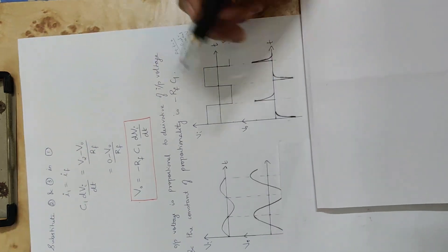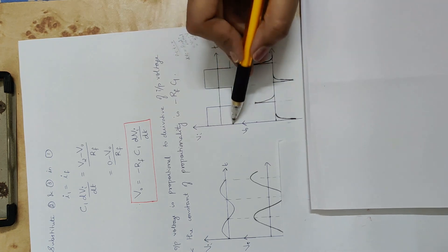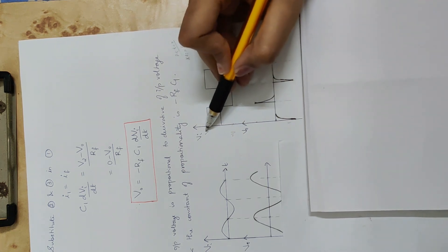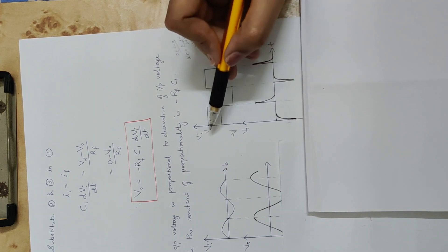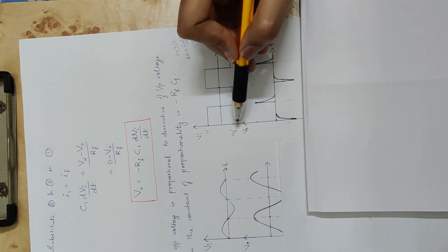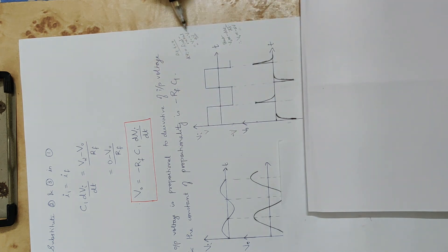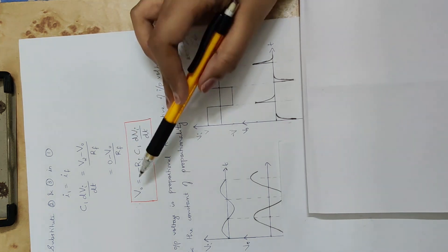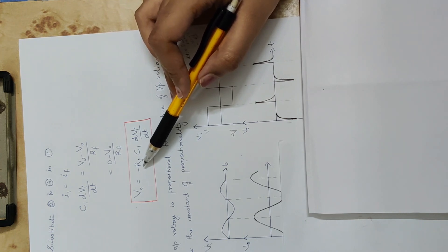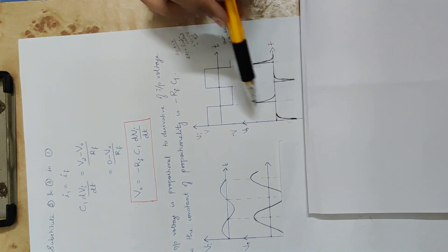At time t equal to zero, consider the change in input voltage. It goes from minus V to plus V. The change in voltage is final minus initial value: V minus of minus V, that is V plus V, which is 2V. This is a positive change in voltage, which multiplied by the negative constant gives a negative impulse. Here we have a negative impulse.